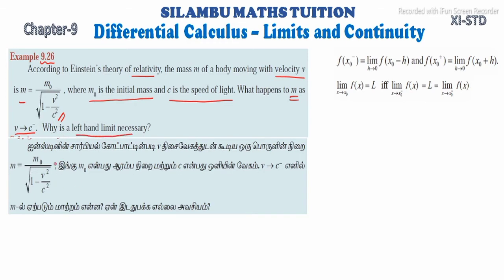Okay, see in Tamil: as velocity v increases, the mass m changes. This expression has m0 as the rest mass and c as the speed of light. As v tends to c minus, what happens to m, and why is the left-hand limit necessary? We need to find what changes occur in mass m and why the left-hand limit is important.